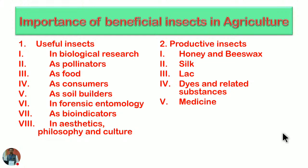The second classification covers productive insects, which either synthesize products from their bodies while alive, or whose whole bodies are utilized as a substance or product for treatment or other uses in human lifestyle. Honey bees produce honey and beeswax, silkworms produce silk of different types, the lac insect produces lac, and various dyes and related substances are extracted from insect bodies. Some insect-derived products are also collected for use in medical treatment.